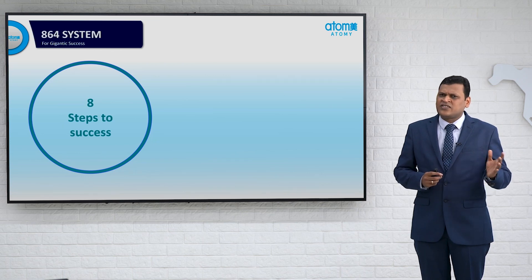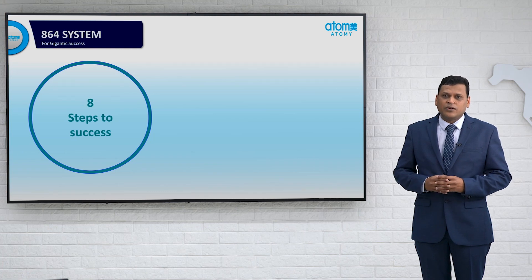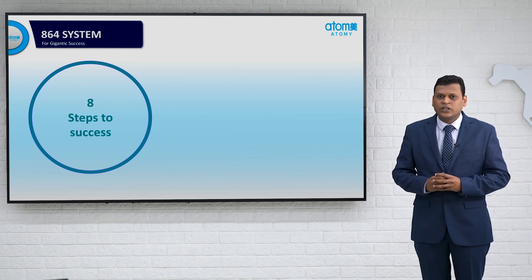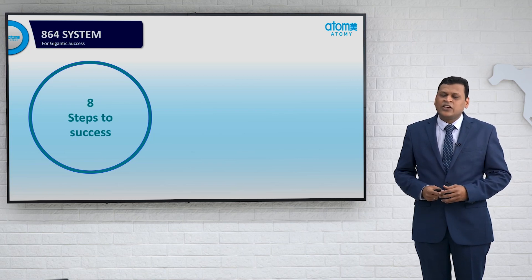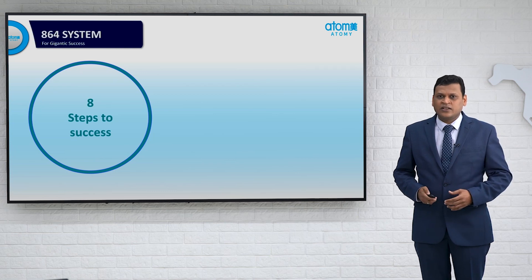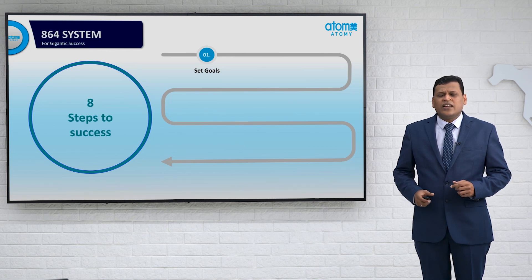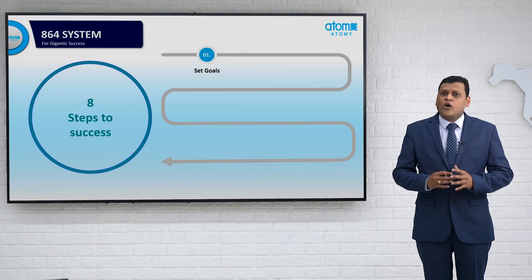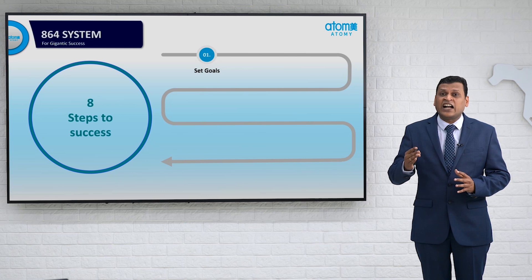You just went through the eight steps to success video of our Honorable Chairman, Mr. Hungil Park. It was a detailed video, but I will touch some of the points in this presentation. The first step in this is to set goals. There are two types of goals: one is a short-term goal and the second one is a long-term goal.